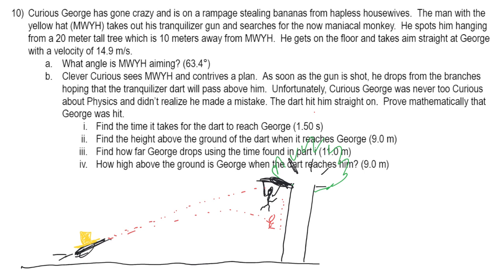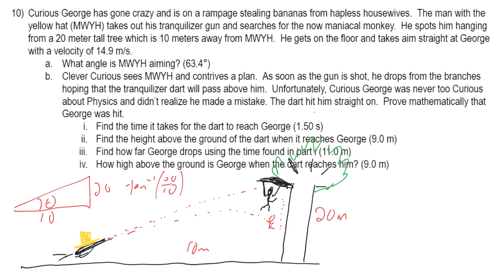The first part of the problem is finding the angle the hunter aims at — a simple trig problem. The monkey is 20 meters high and the hunter is 10 meters away, forming a right triangle with sides 20 and 10. Using the tangent function: tan(θ) = 20/10, giving an angle of 63.4 degrees.